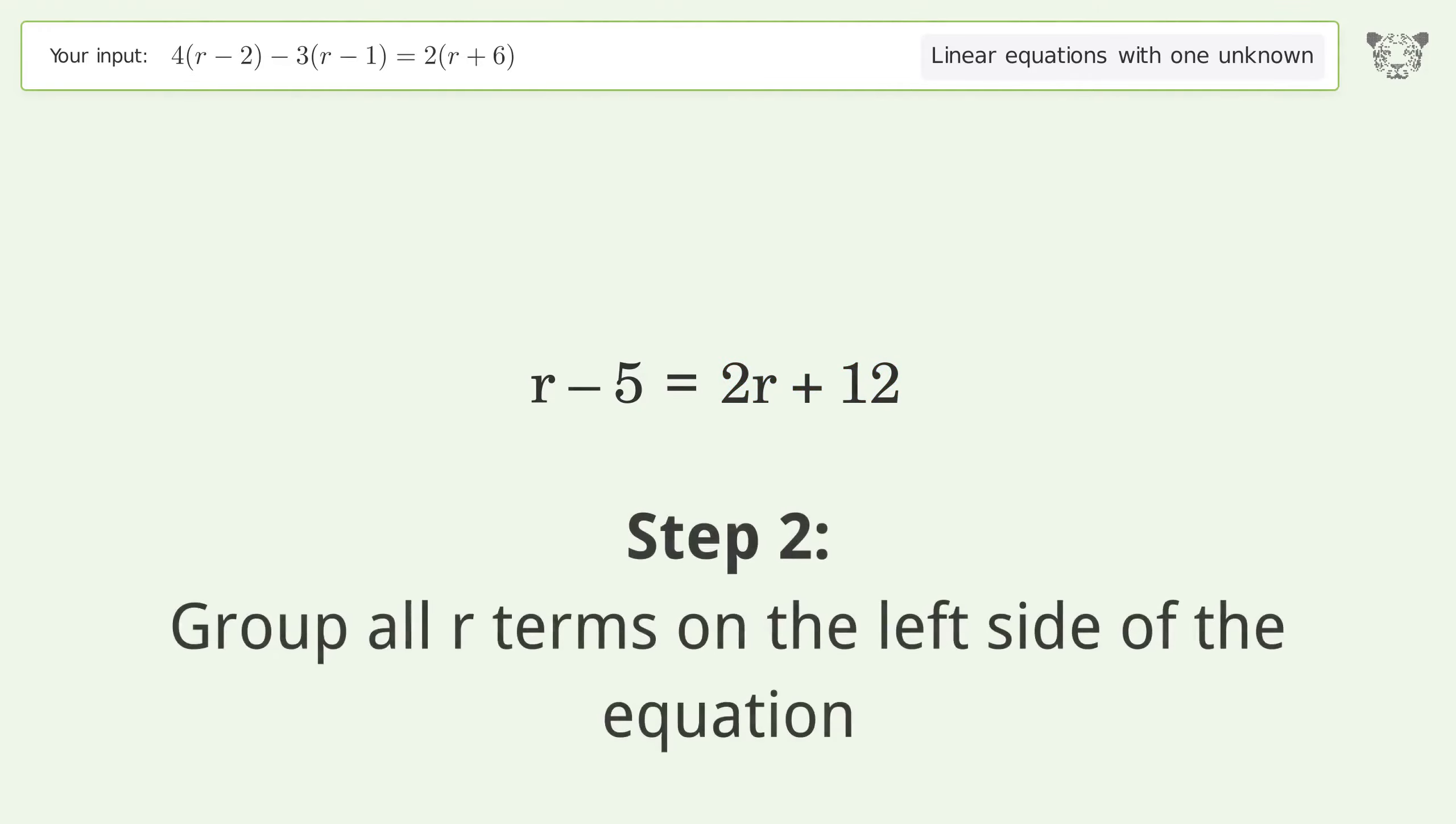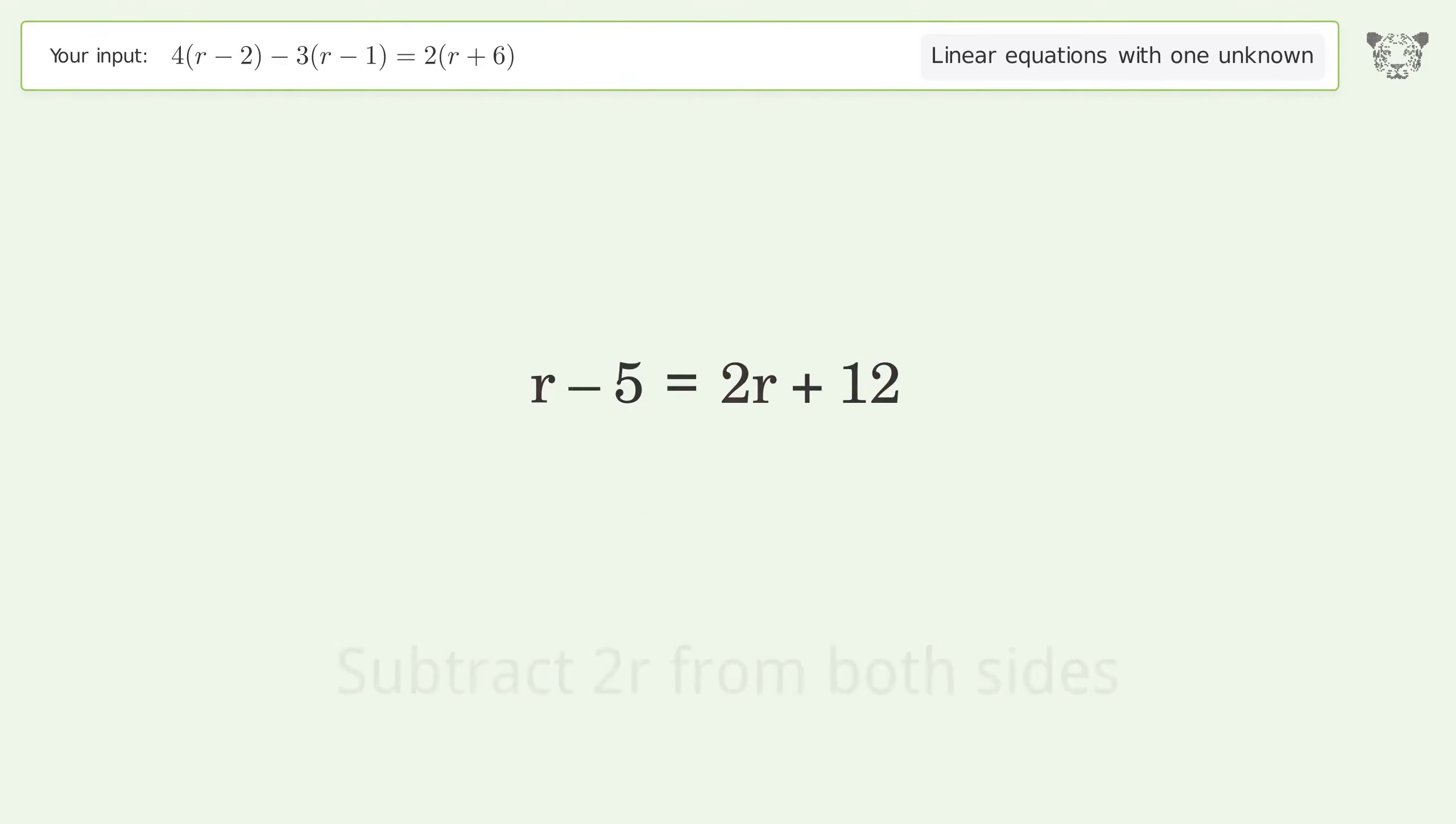Group all r terms on the left side of the equation. Subtract 2r from both sides. Group like terms. Simplify the arithmetic.